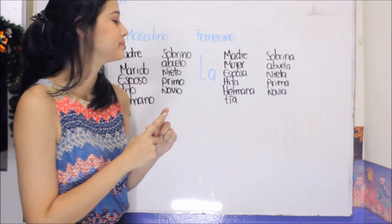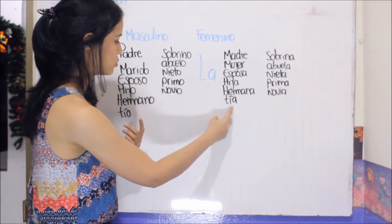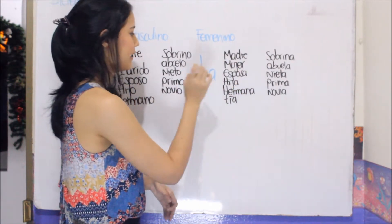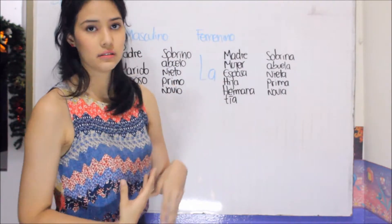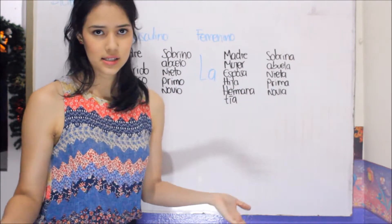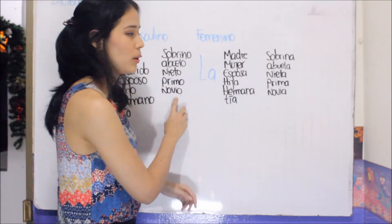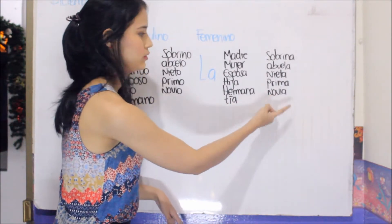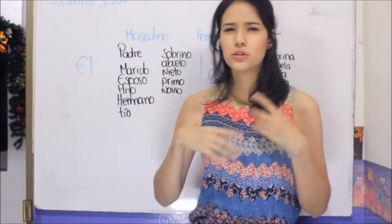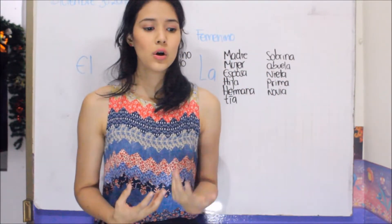'Hija' changes by the letter A. 'Hermano' or 'hermana' — brother and sister. 'Tío' or 'tía' — uncle and aunt. 'Sobrino' and 'sobrina' — nephew and niece. 'Abuelo' and 'abuela' — grandfather and grandmother. 'Nieto' and 'nieta' — grandson and granddaughter. 'Primo' and 'prima' — cousin. In English it is the same word, but in Spanish we always make the distinction. 'Novio' — boyfriend; 'novia' — girlfriend. As you can see, most of these words end in O for male and most end in A for female.